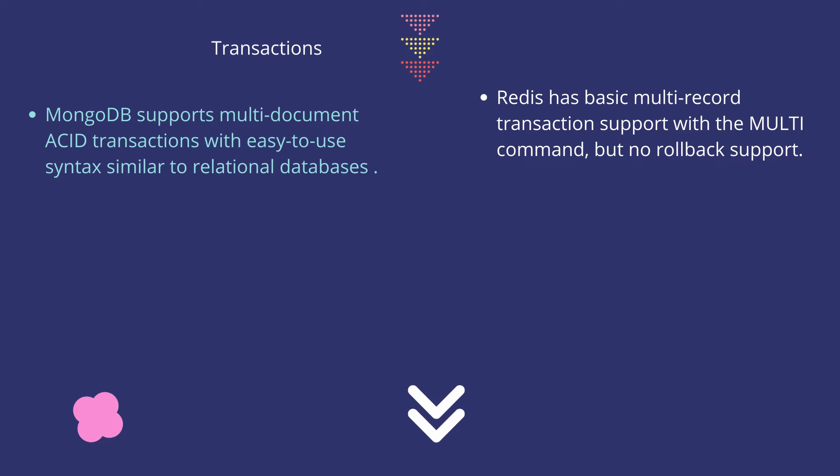Coming to transactions, MongoDB supports multi-document ACID transactions with easy-to-use syntax, which are very similar to relational databases. On the other hand, Redis has basic multi-record transaction support with the MULTI command, but it has no rollback support.